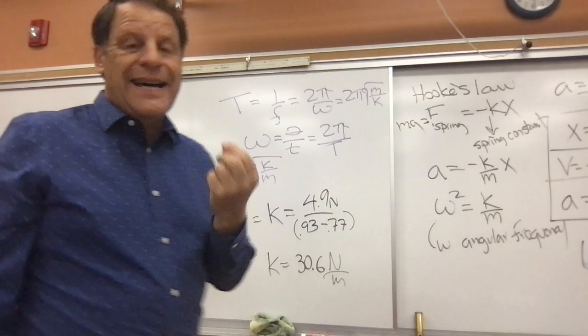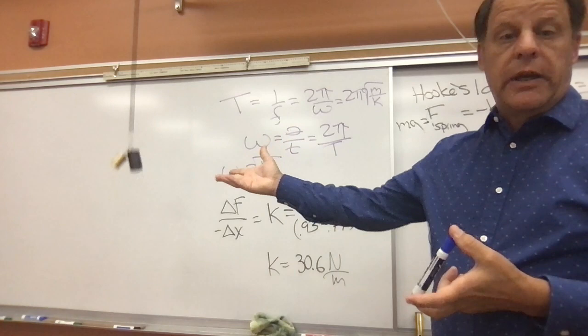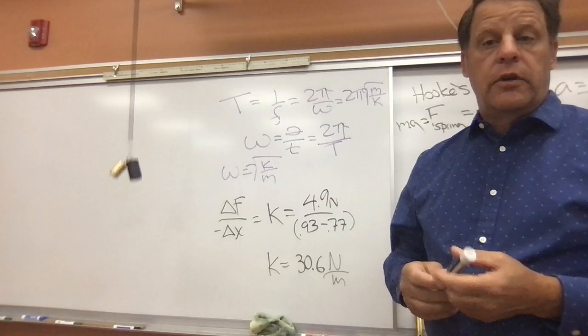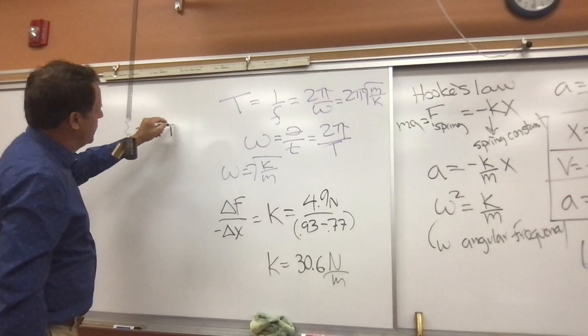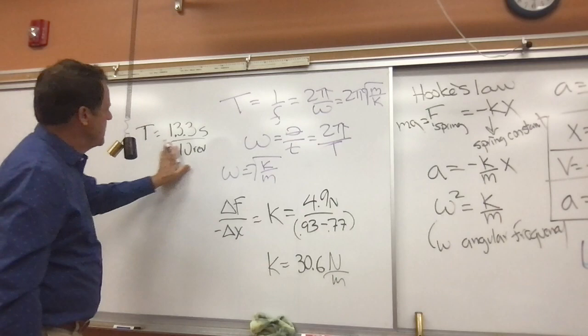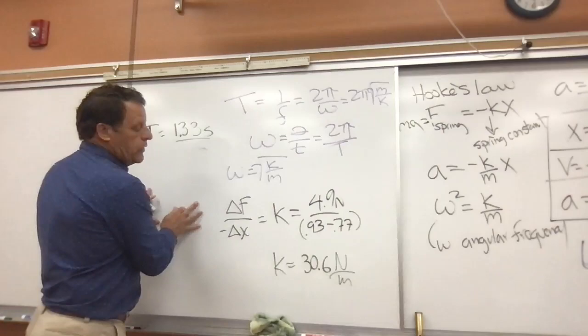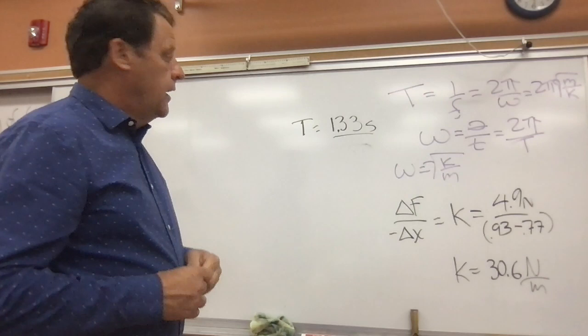If we start up here and let it go and time the period — the time for one cycle — we would get the period. It's better when doing this experiment to do 10 cycles. I did this before and found that the total time was 13.3 seconds for 10 cycles, so if we divide by 10 our period is going to be 1.33 seconds. So we know our K value, we know our period, and now we can figure out our omega and our frequency.